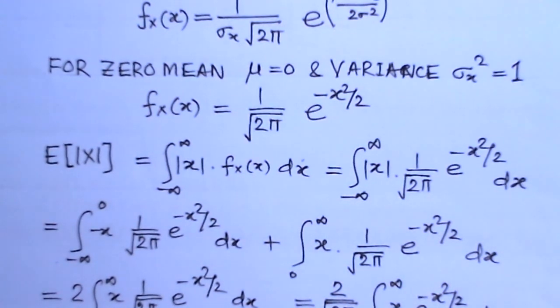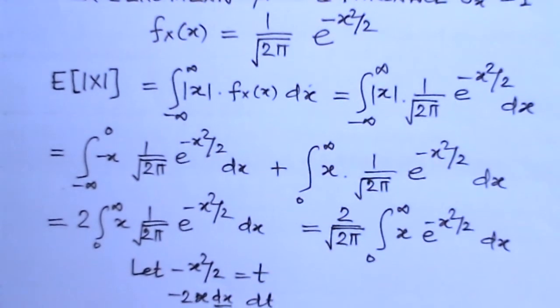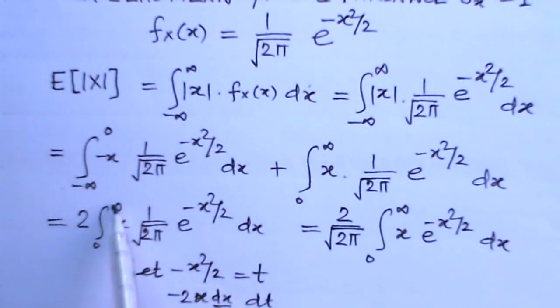Now we simplify this integral. So we get twice 0 to infinity, x times 1 over root 2 pi, e to the power minus x squared over 2 dx. Simplifying, this comes to 2 over root 2 pi. Now by simple substitution we have to solve this integral.